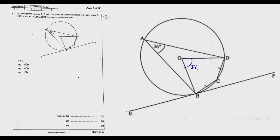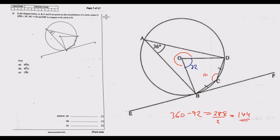Having found BOD = 72°, we can find angle BCD. The angle at the circumference is half the angle at the center, but for the other arc, it's 360 minus 72, which gives us 288. Half of 288 gives us the angle at C — so angle BCD equals 144 degrees.